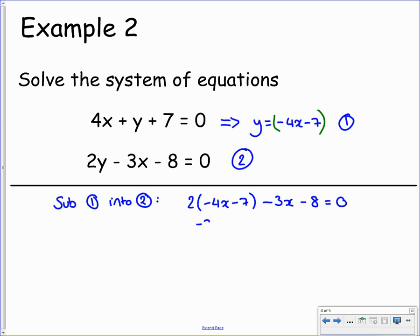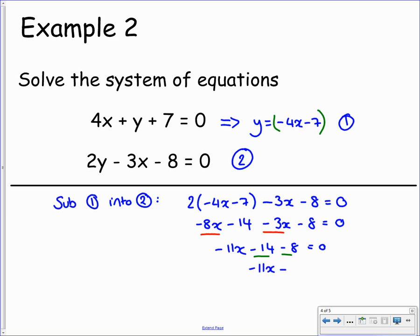Expanding: 2 times negative 4x gives negative 8x, and 2 times negative 7 is negative 14, minus 3x minus 8, equals 0. Collecting like terms: negative 8x take away 3x gives negative 11x, and negative 14 minus 8 gives negative 22. So we have negative 11x minus 22 equals 0. Adding 22 to both sides: negative 11x equals 22. Dividing by negative 11 — dividing a positive by a negative gives a negative answer — so x equals negative 2.